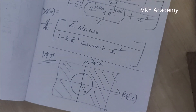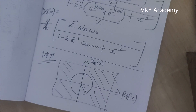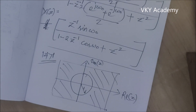In the next class, we will determine the Z-transform of a^n·cos(ω₀n)u(n) and a^n·sin(ω₀n)u(n) using the scaling property, also known as the multiplication by exponential property. Thank you.